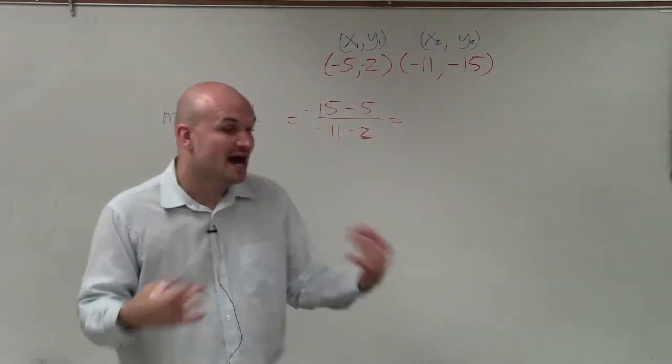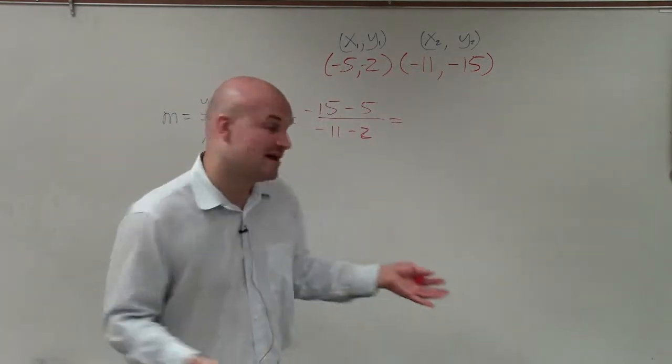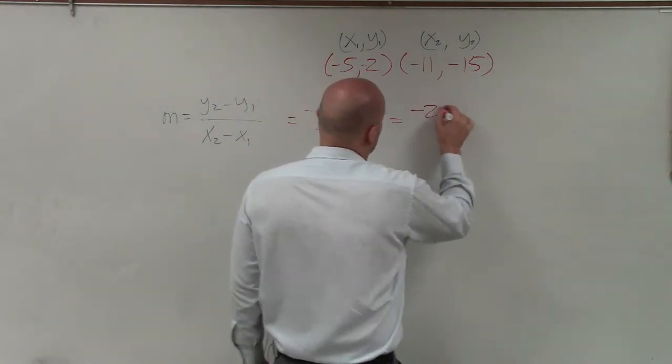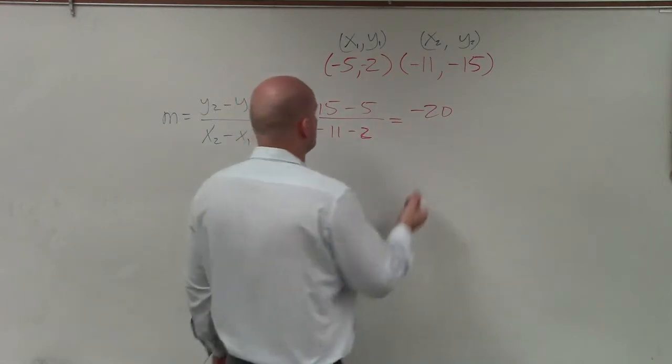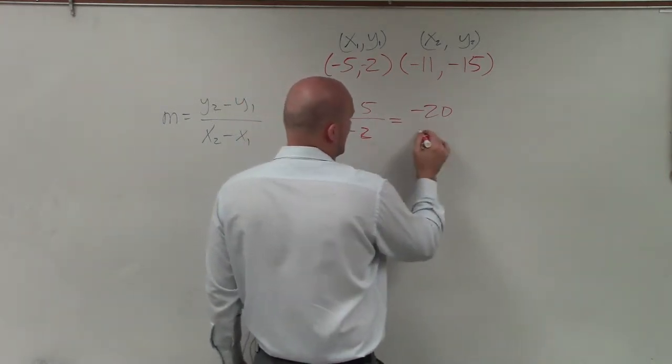So negative 15 minus 5, I owe $15, I borrow 5 more. That means it's going to be negative 20. And I owe $11, and I borrow 2 more. So therefore, that's going to be negative 13.